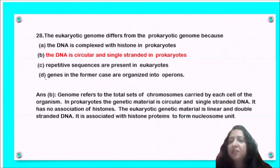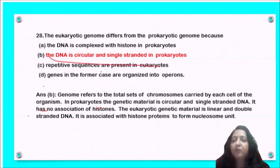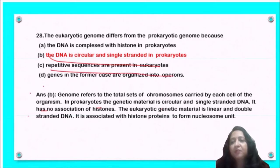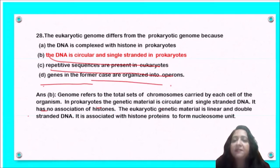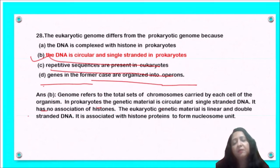Next question: the eukaryotic genome differs from the prokaryotic genome because — DNA is complexed with histones in prokaryotes; DNA is circular and single-stranded in prokaryotes; repetitive sequences are present in prokaryotes; or genes are organized into operons? Option B is the correct answer: the DNA in prokaryotes is circular. Note: prokaryotic DNA is double-stranded, not single-stranded, but genes in prokaryotes are organized into operons.